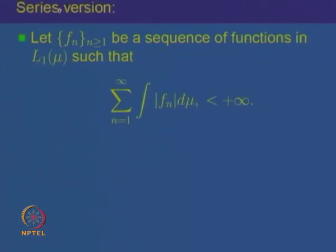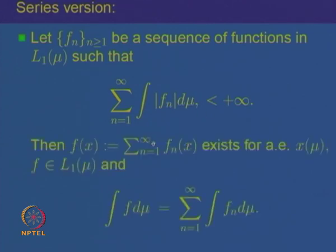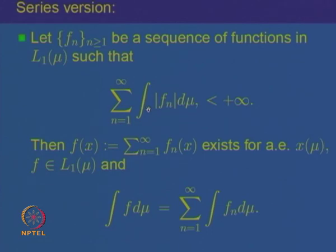Let us prove the series version of this theorem: if f_n is a sequence of integrable functions and the sum of all the integrals of |f_n| is finite, then the series Σf_n(x) converges almost everywhere. If we denote the sum as f(x), then f is integrable and the integral of f equals the summation of the integrals of f_n. Essentially, this theorem says that if Σ∫|f_n| < ∞, then Σf_n(x) is convergent almost everywhere and the integral equals Σ∫f_n.